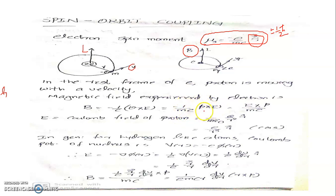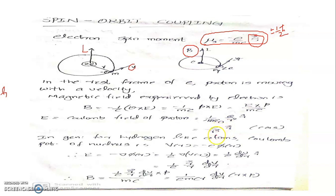Here E is the Coulomb field of the proton. In the hydrogen atom, this field is E = (1/4πε₀)(e/r²) r̂ in SI units. In CGS units where 1/4πε₀ = 1, this becomes E = (e/r²) r̂ = (e/r³) r. This is the vector form of Coulomb's law, also known as the Coulomb field.